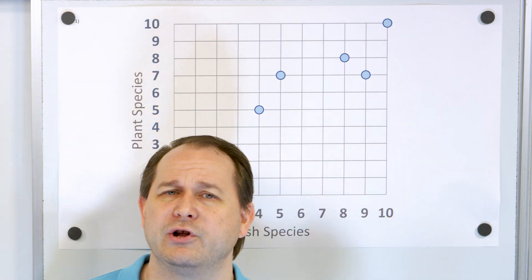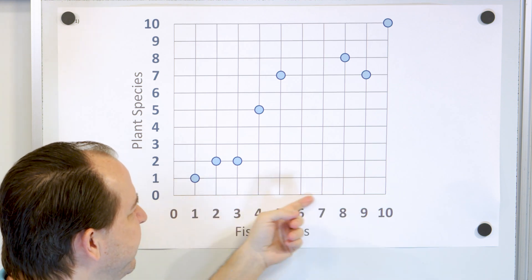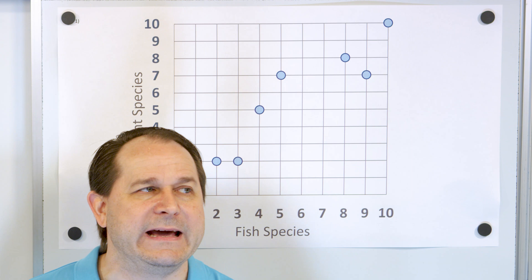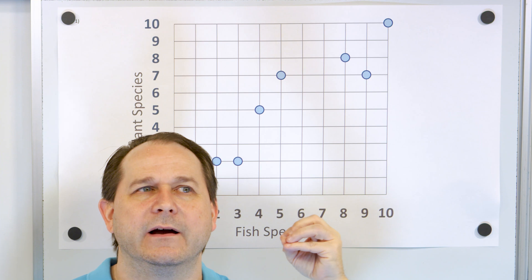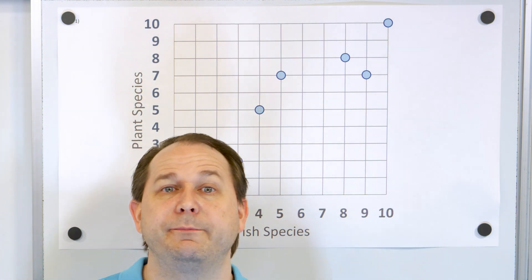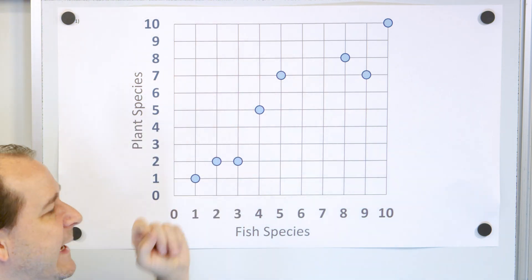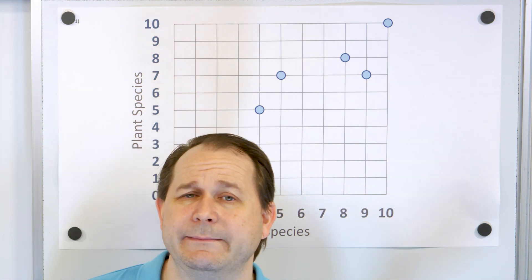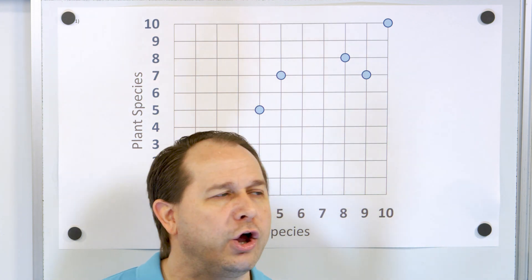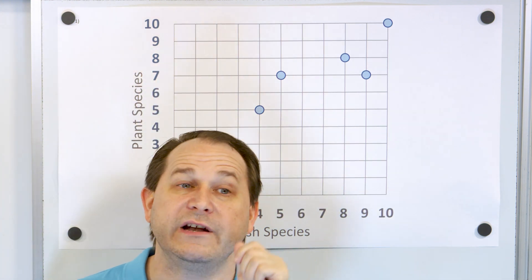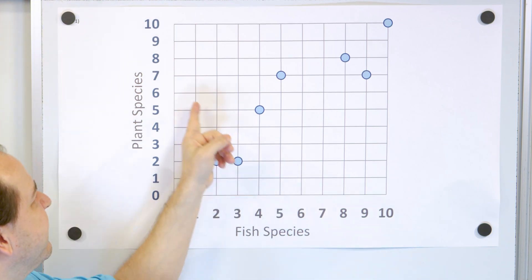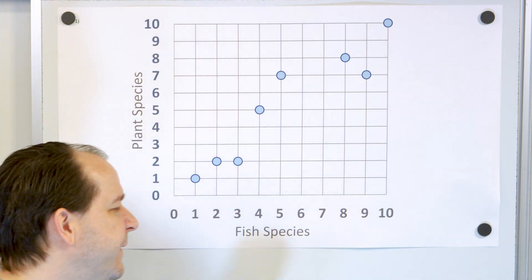Now the question is, what does it mean? A lot of people look at this and say that as we put more species of fish in the pond, somehow they're causing more species of plant to be there. The mistake people make is thinking that increasing the number of fish species is somehow causing the increased number of plants. That could be true, but this data does not prove it. Maybe those ponds have better pH, better climate, more oxygen. All you know is that ponds with more fish species have more plant species, but one is not necessarily causing the other — it could be some other factor causing both variables to be higher. We just say they're correlated; this is a positive correlation.